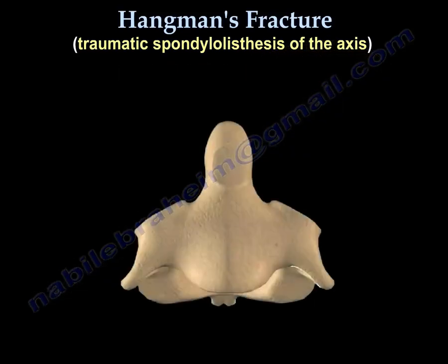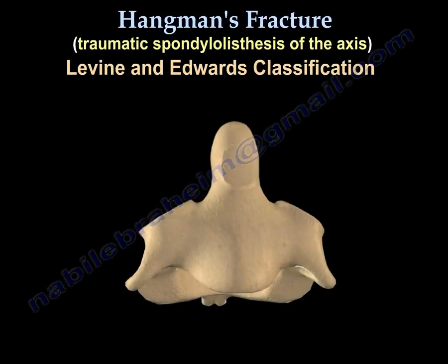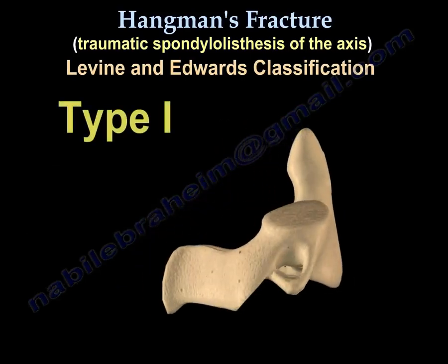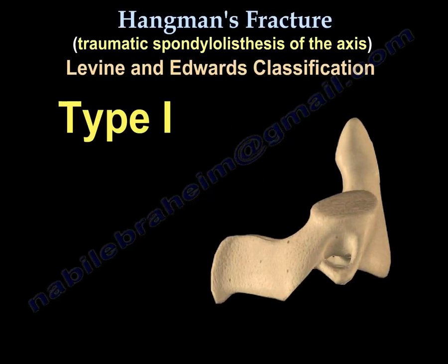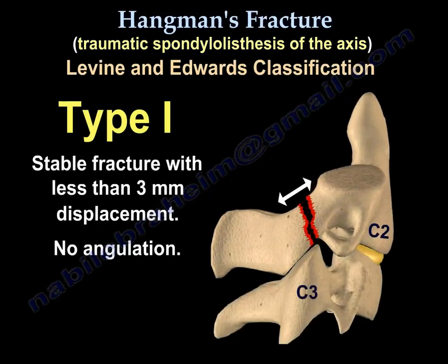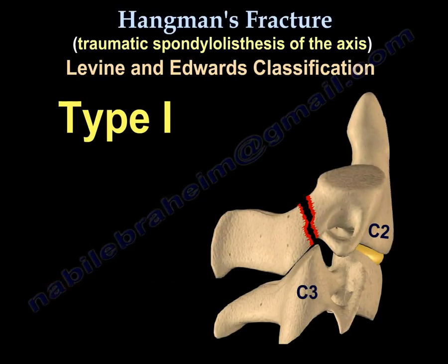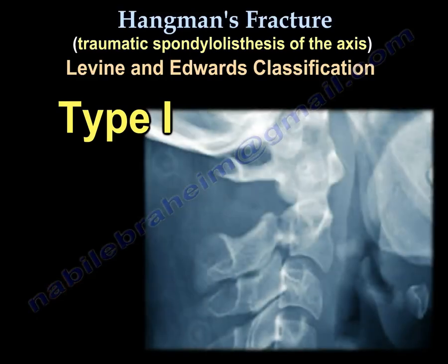There is a classification for Hangman's fracture by Dr. Levine and Dr. Edwards. Type 1 is a stable fracture with less than 3 mm displacement and no angulation. The treatment is cervical orthosis. Here is an example of a Type 1 Hangman's fracture with minimal displacement.